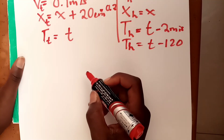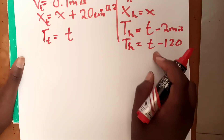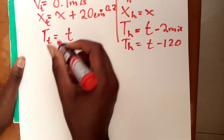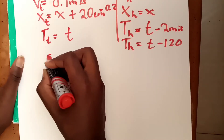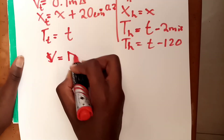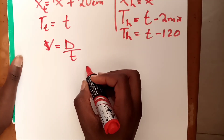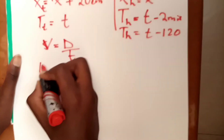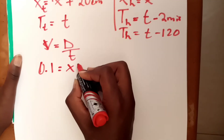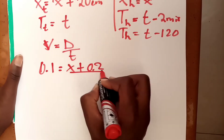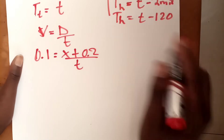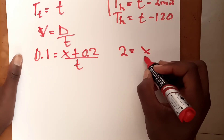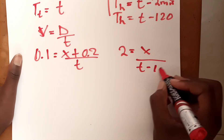Now we use the kinematics equation: speed equals distance over time. For the tortoise: 0.1 equals (x + 0.2) over t. For the hare: 2 equals x over (t minus 120). We now have two equations with two unknowns, x and t.